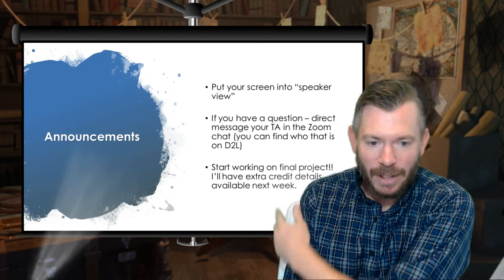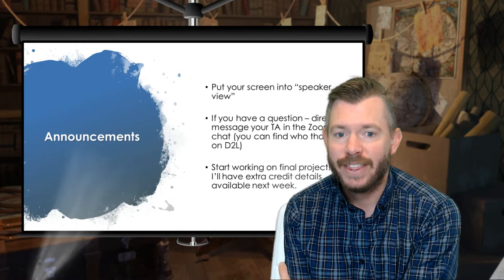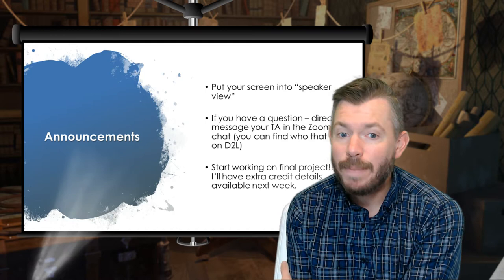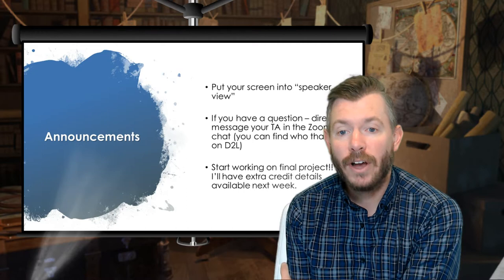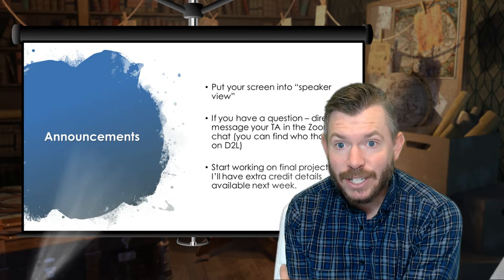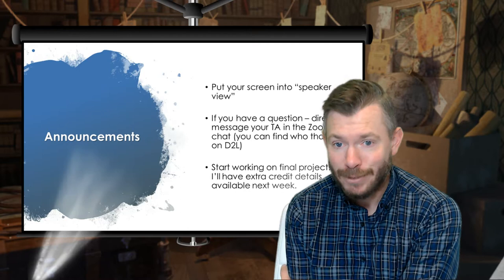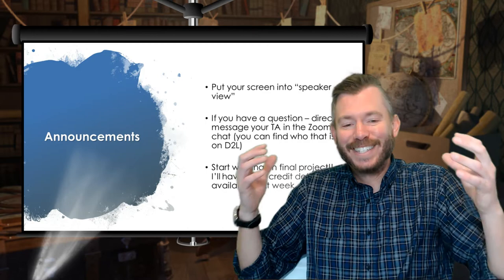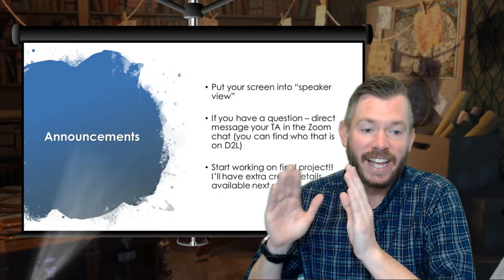Start working on your final project. There is one final opportunity for extra credit in this class on our last Friday, which is actually the day the project is due. What we're going to do is have a little showcase — up to about 10 people can present part of their project if they would like. If you do that, you'll get a little half-grade bump, so five points on the final project itself. Nobody has to do it if you don't want people seeing your project, but if you're proud of your work and want to share it, absolutely sign up.